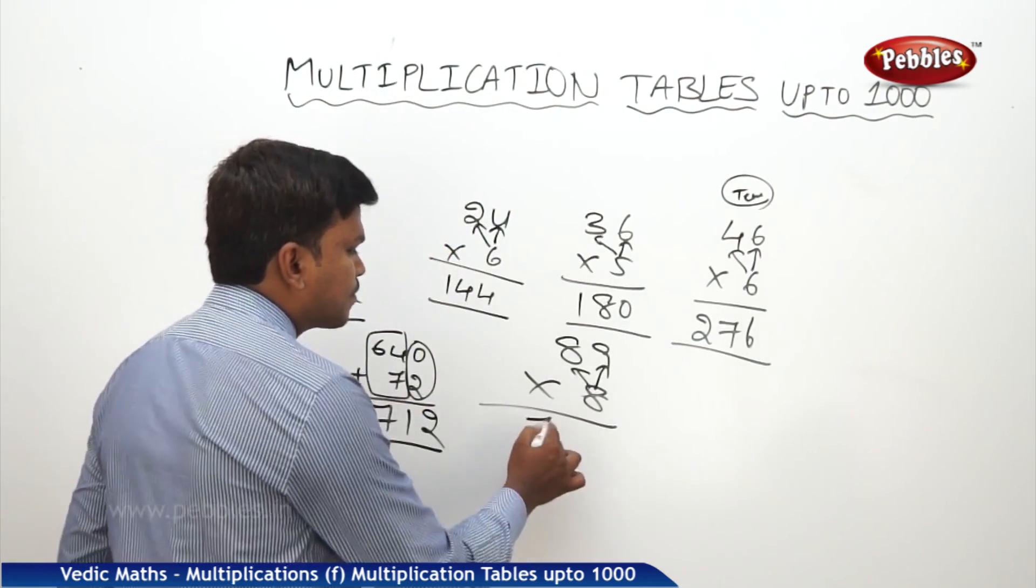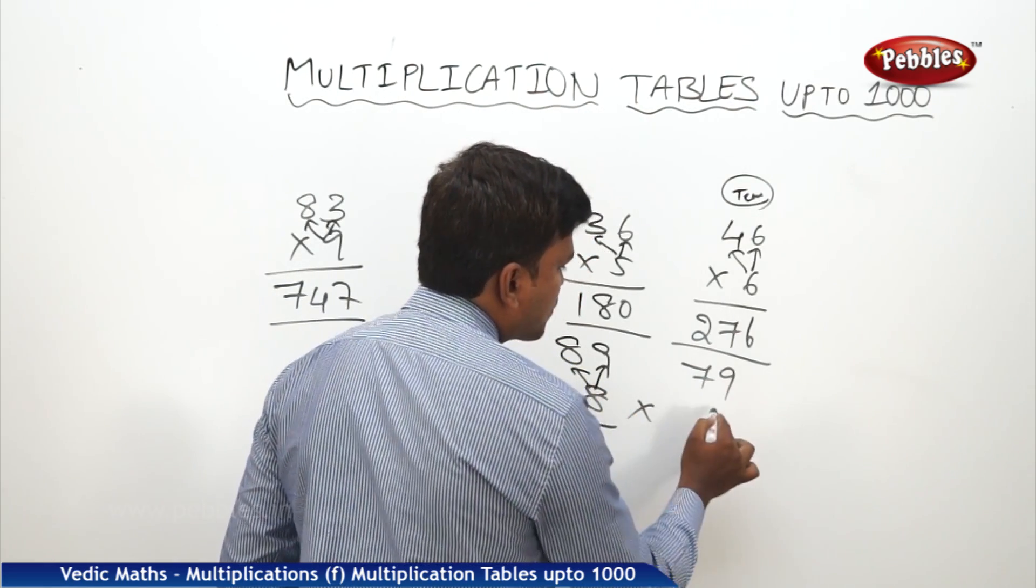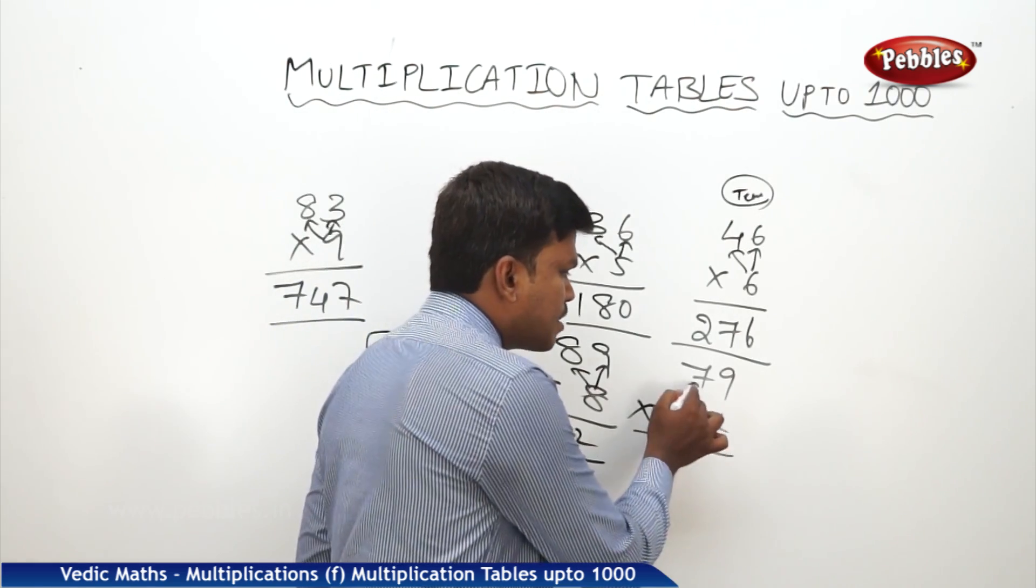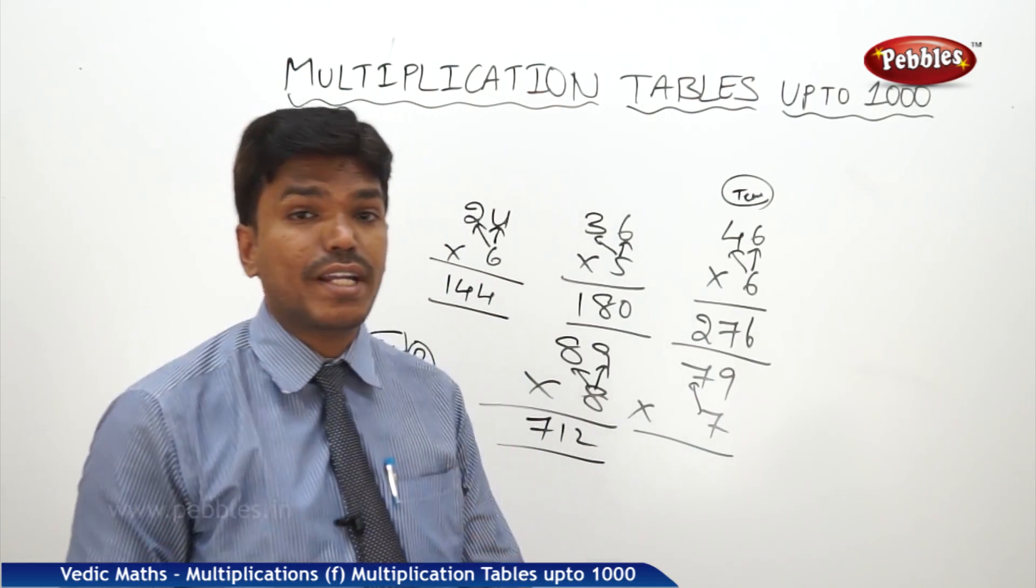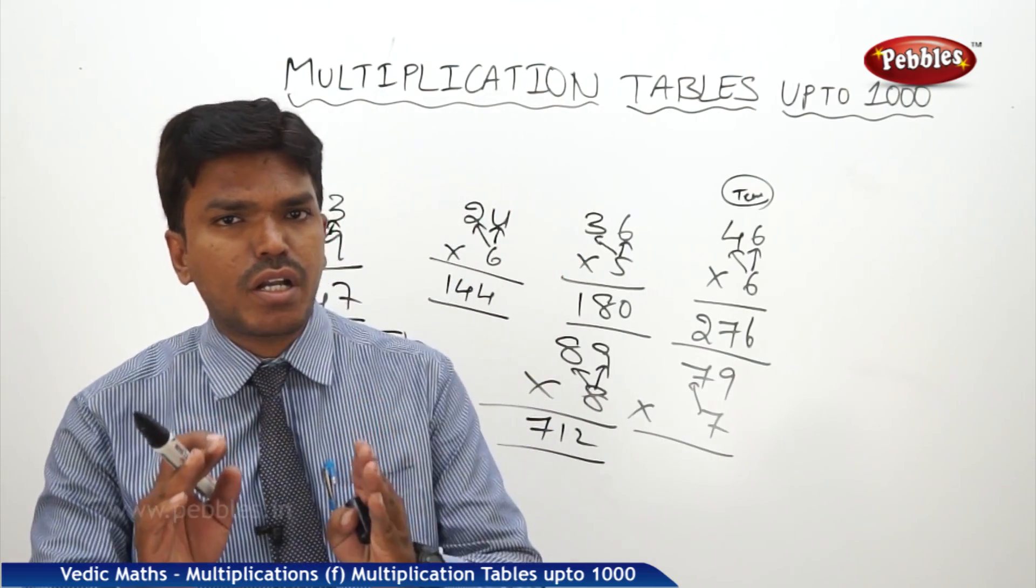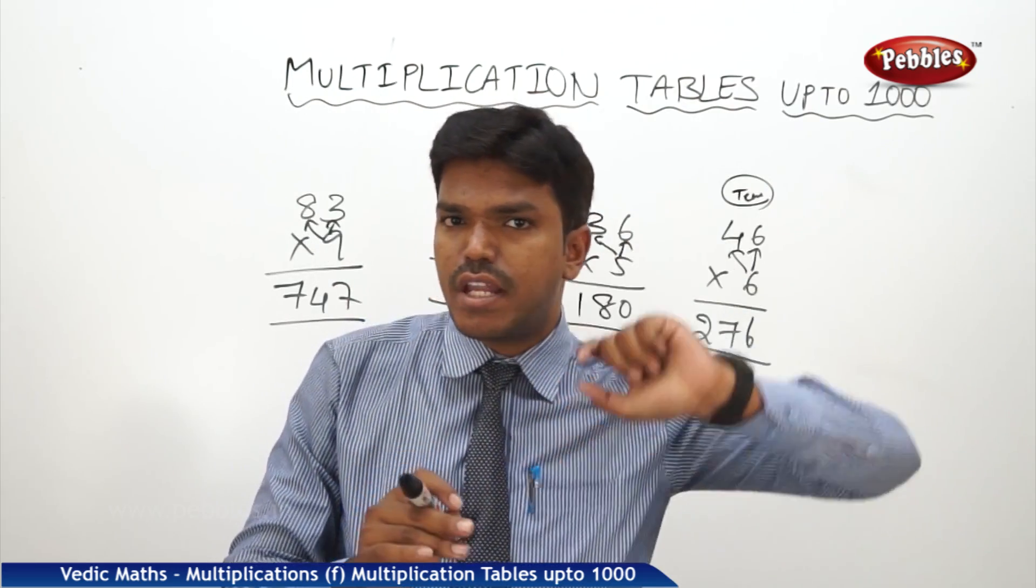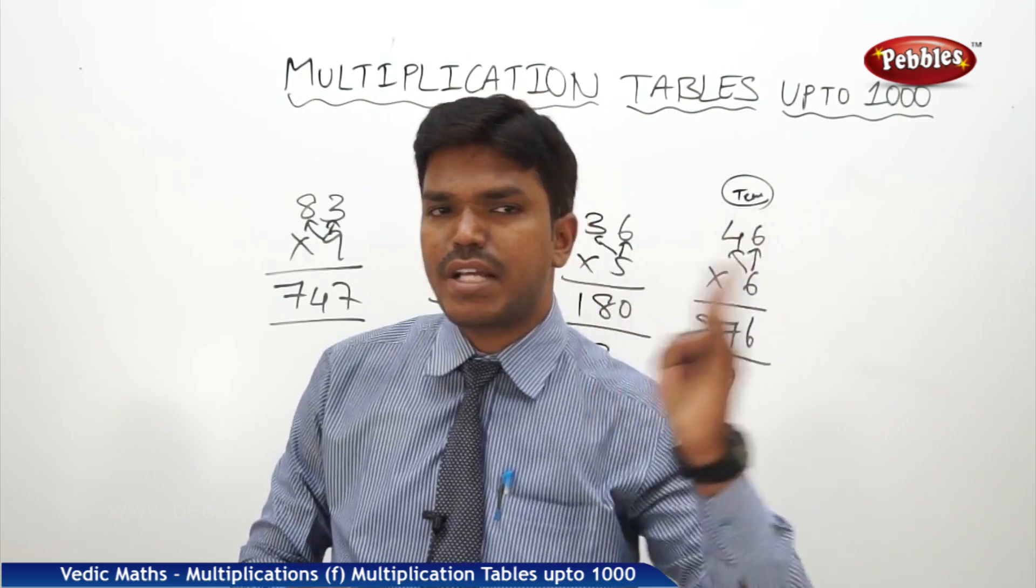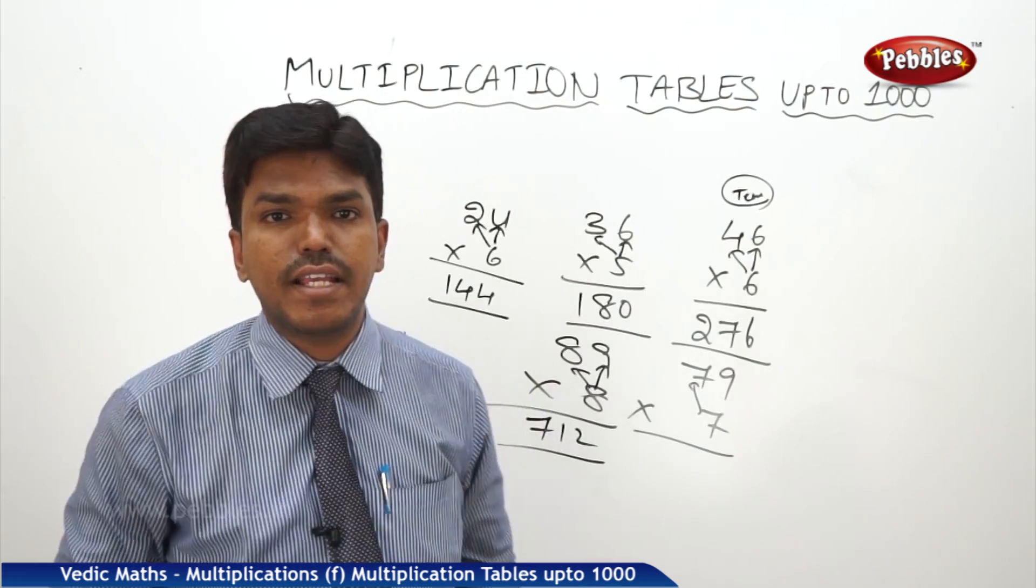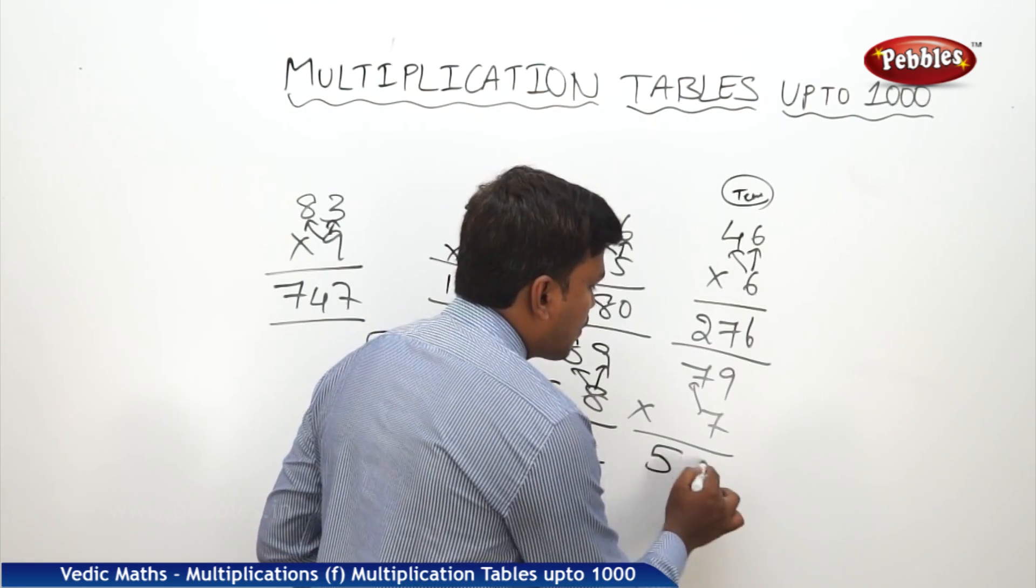One more example. Suppose say 79 into 7. The same rule we are going to follow. 7 sevens 49, but take it as 490. 490 plus 63. Remember 0 plus 3 will get 3 as it is at the end. What is 49 plus 6? 55. So my answer is 553.